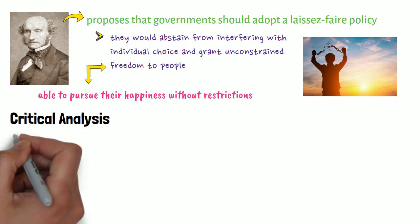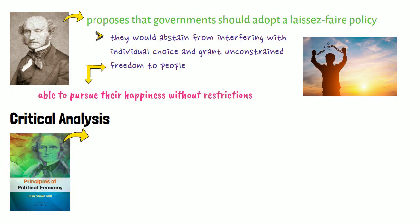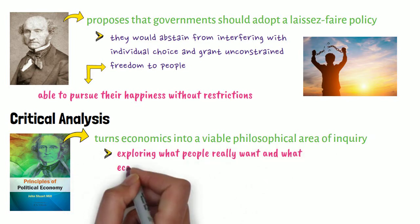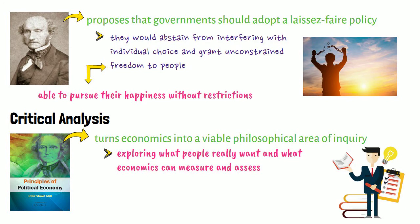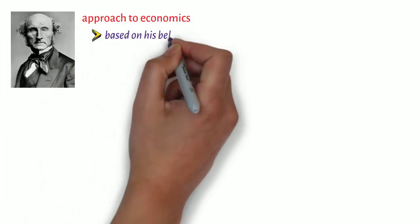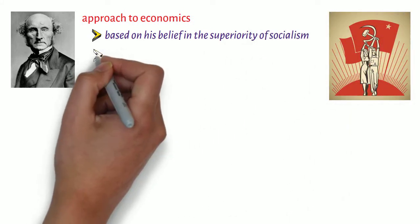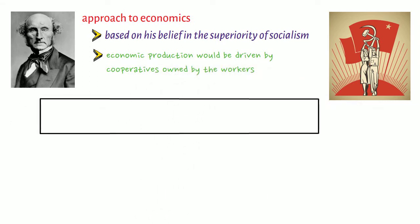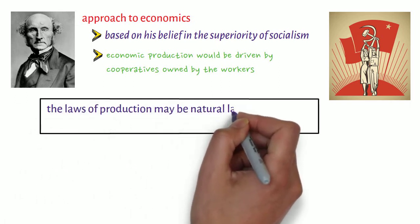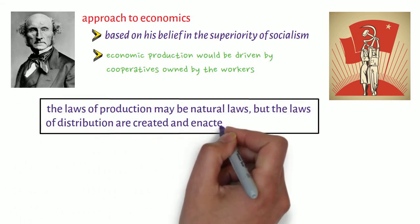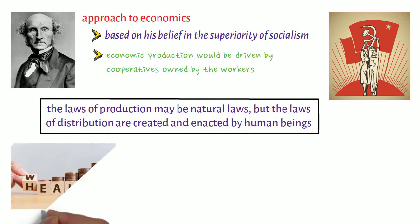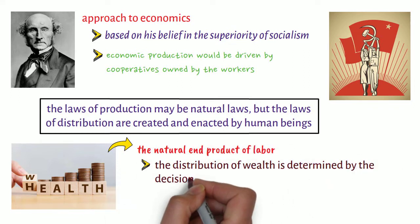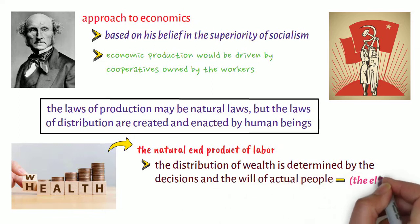In Principles, Mill turns economics into a viable philosophical area of inquiry by exploring what people really want and what economics can measure and assess. Mill's approach to economics is based on his belief in the superiority of socialism, in which economic production would be driven by cooperatives owned by the workers. To this end, Mill argues that the laws of production may be natural laws, but the laws of distribution are created and enacted by human beings. In other words, wealth is the natural end product of labor, but the distribution of wealth is determined by the decisions and the will of actual people — that is, the elite — and is not simply part of the order of nature.